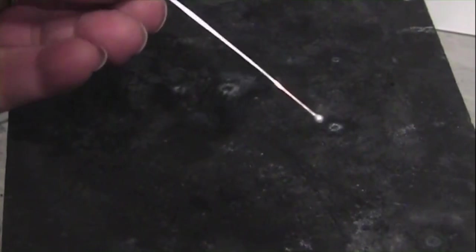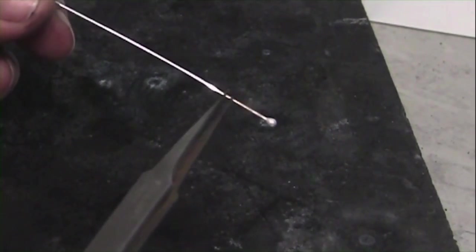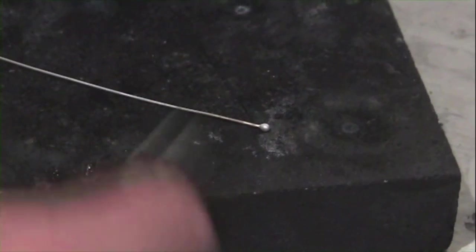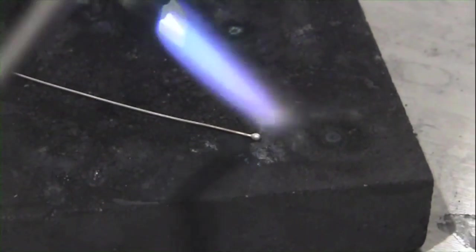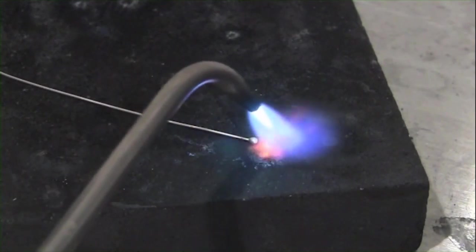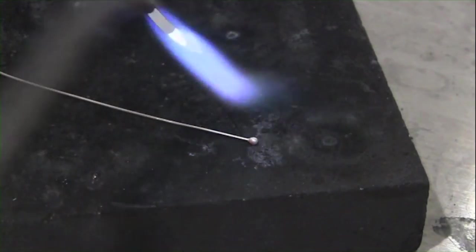You can see by the slight discoloration near the bead that the heat has transferred only a few millimeters up the wire. By going back in with the flame, I can burn those oxides off and there's no need to pickle.